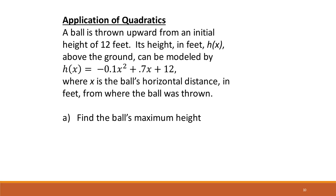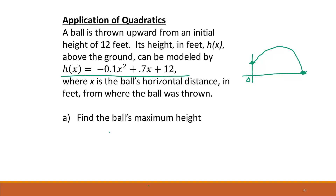Now let's look at applications of quadratics. A ball is thrown upward from an initial height of 12 feet. Thinking of this as a graph, we start at 12 feet — that's our y-intercept. The ball goes up, reaches a maximum, then hits the ground at the x-intercept. The formula is h(x) = −0.1x² + 0.7x + 12, where x is the ball's horizontal distance. We want to find the ball's maximum height, which is the y-value of the vertex.